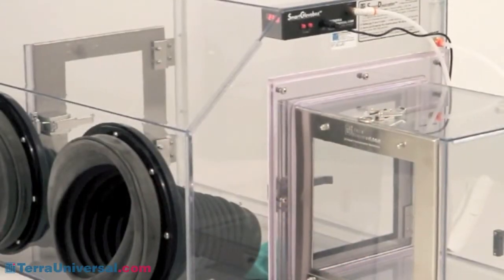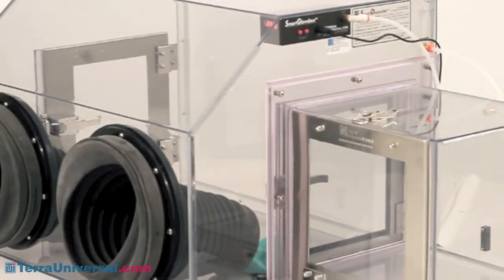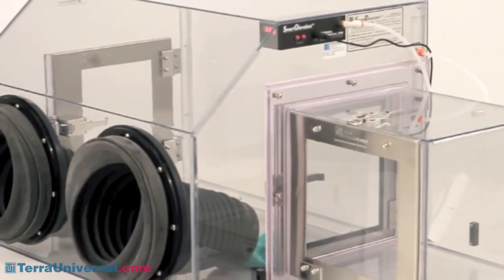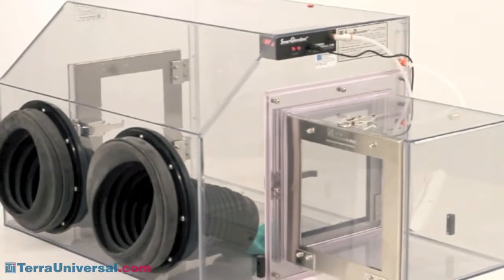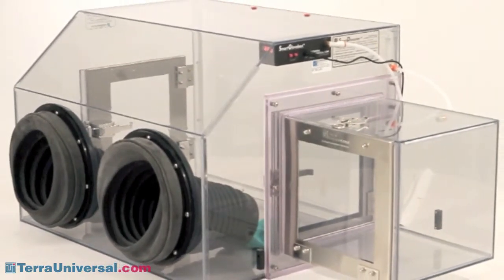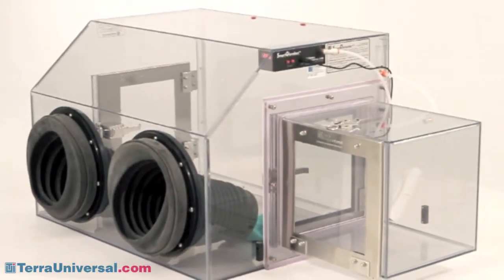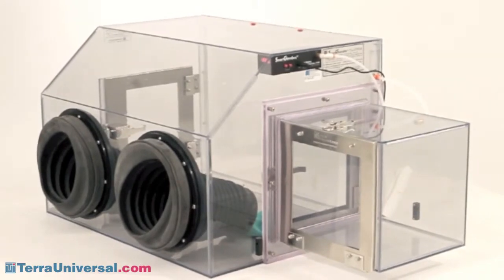Different processes call for different materials and Terra offers many choices to meet your requirements. The unit shown here is fabricated of static dissipative PVC, a rigid plastic that features highly durable embedded dissipative layers that safely discharge surface charges to ground.